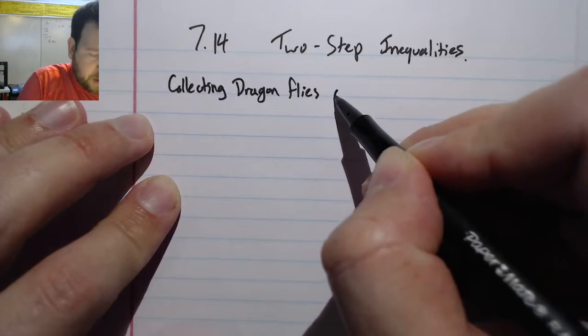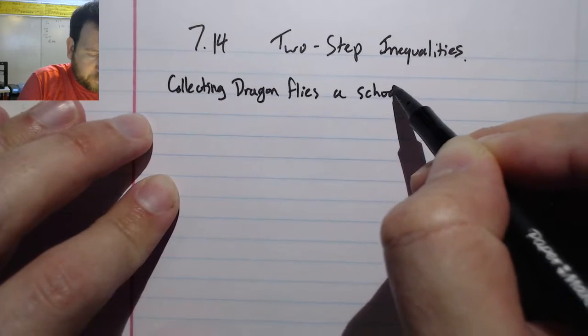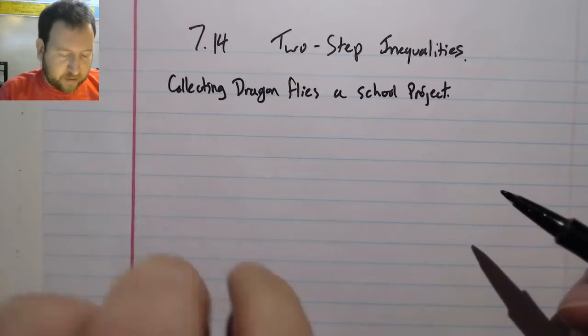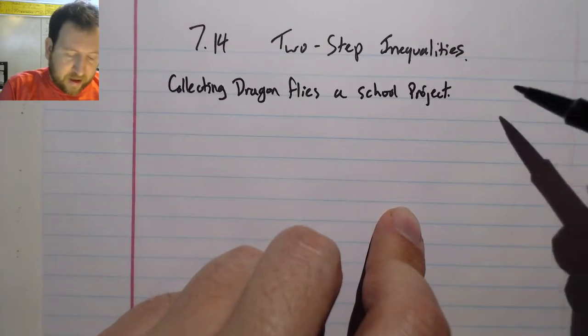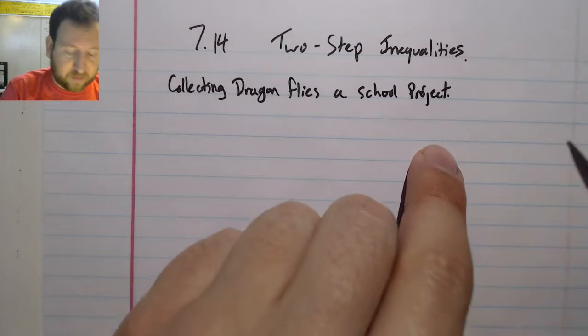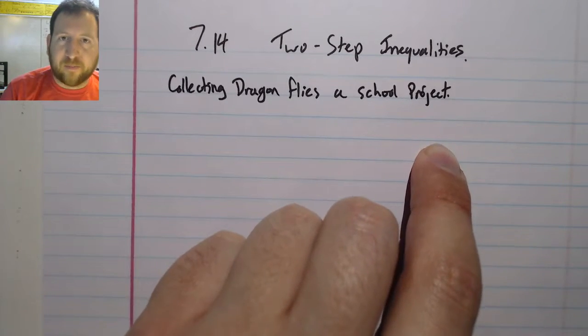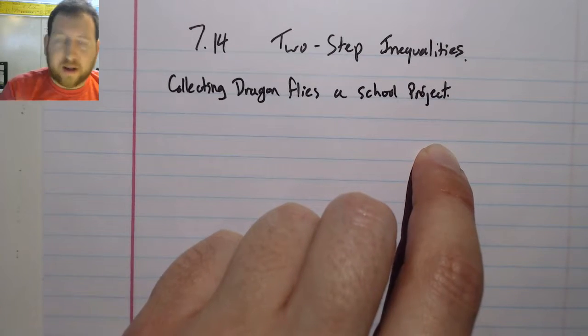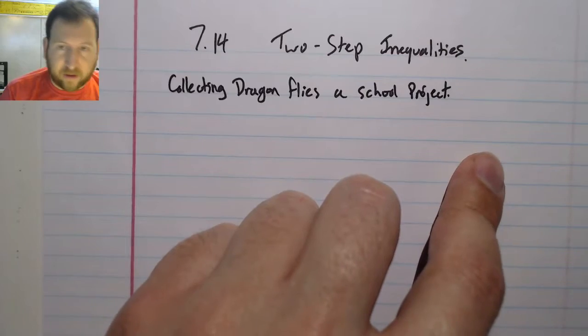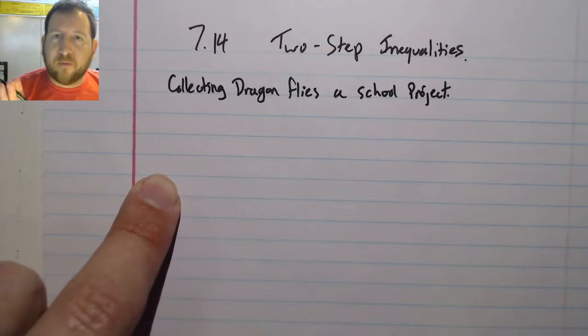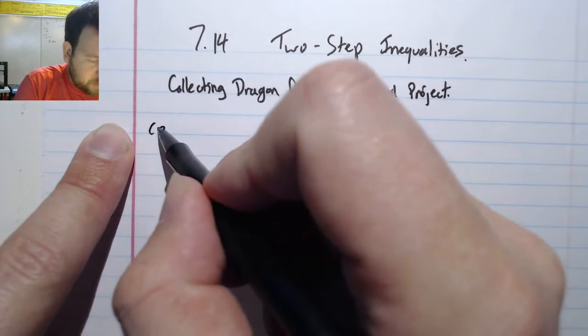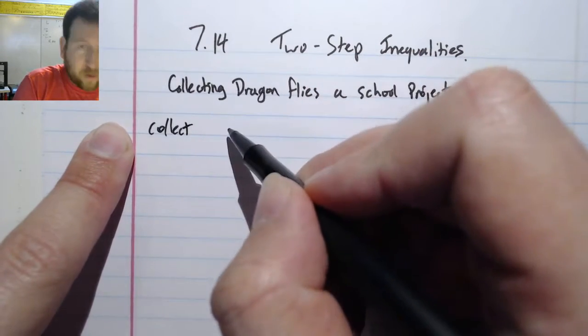This is for a school project. Now, to collect dragonflies typically you catch them and then you freeze them and you put little pins through them and display them on a board to kind of look at all the differences between them. It's kind of dark I guess, but in science you need to catch specimens of whatever you're looking at in order to do it. And for this project we're gonna need to collect at least 32 dragonflies, quite a bit I guess.